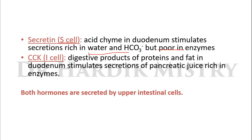Cholecystokinin is a hormone released from the I cells of the small intestinal mucosal cells. Digestive products of proteins and fats in the duodenum stimulate secretion of pancreatic juice rich in enzymes. The stimulus for the release of cholecystokinin is the digestive products of proteins and fat. The stimulus for secretin is acid chyme, whereas the stimulus for cholecystokinin is the digestive products of proteins and fat. Both hormones are secreted by upper intestinal cells.